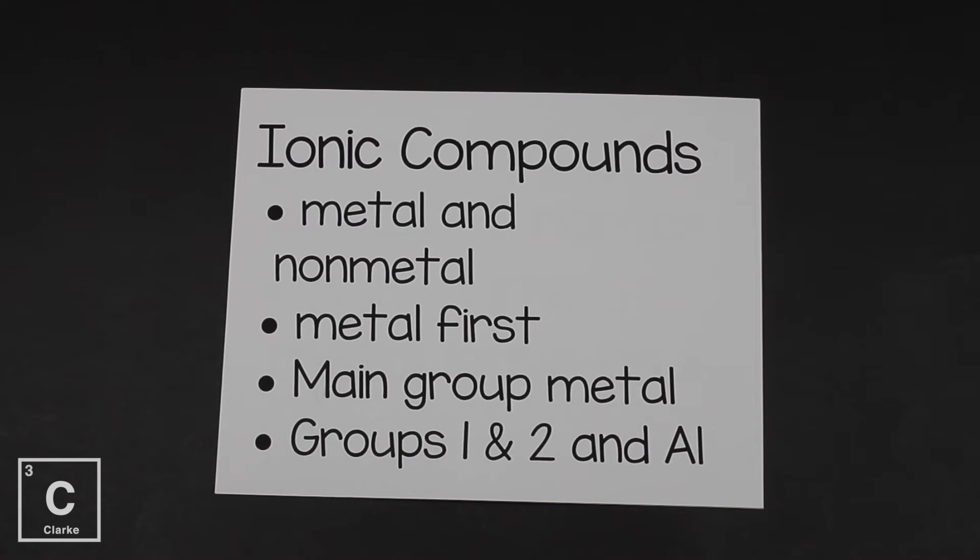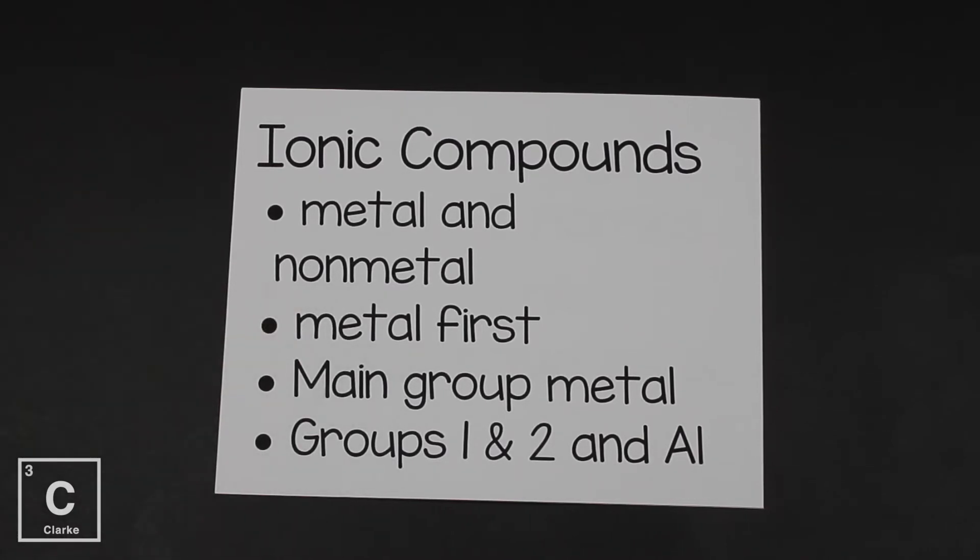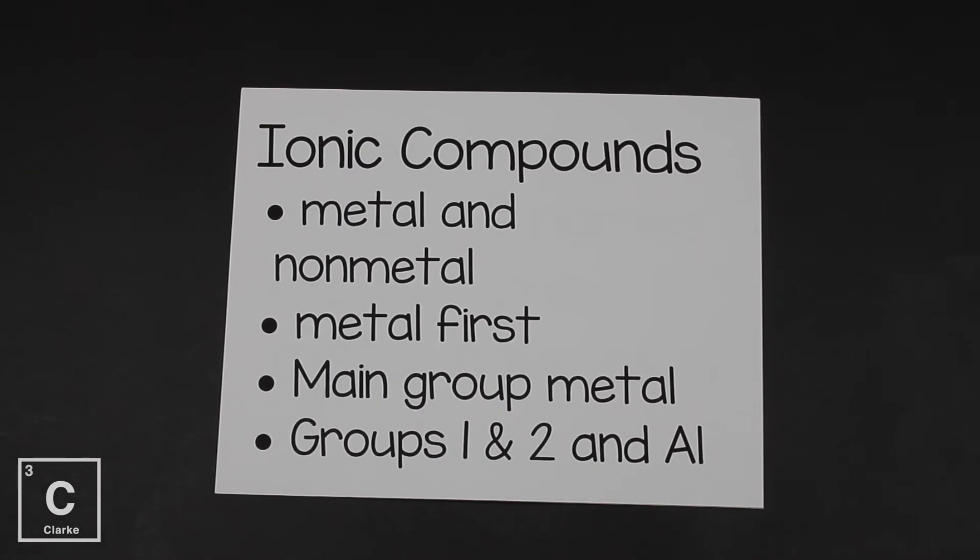So before we get started, let's remember something about ionic compounds. Ionic is when we transfer electrons. And when we transfer electrons, that always occurs between metals and non-metals. When we're naming ionic compounds, we always list the metal first. And remember, we're talking about main group metals. That is group one and two and aluminum. Those are the groups we just looked at on the periodic table.